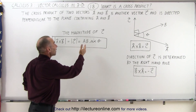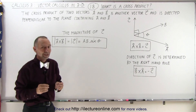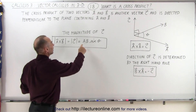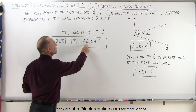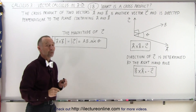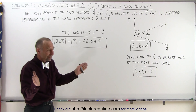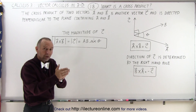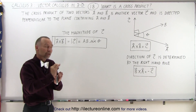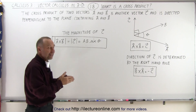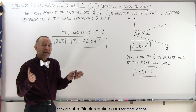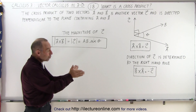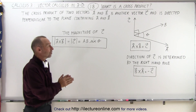was AB times the cosine of the angle between them. But the magnitude of the cross product is A times B times the sine of the angle between them, which means that if the angle between them is zero, the cross product is zero because the sine of zero is zero. The maximum magnitude is obtained when the angle is 90 degrees.